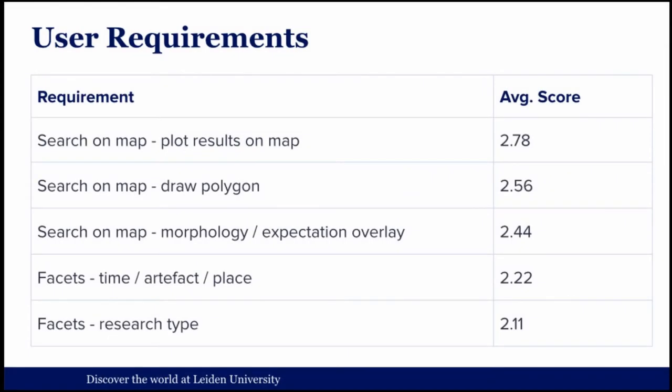What came out of that are the top five user interface requirements. There are basically two things they really need: searching on a map and facets. For the map, they want to plot results, draw polygons to search in a specific area, and have a morphology or archaeological expectation overlay. The facets are basically like the filters you get on an e-commerce site — you have your results and you can filter down on certain criteria.